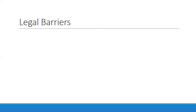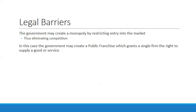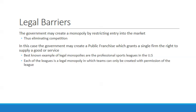In addition to natural and ownership barriers, there are legal barriers. The government may create a monopoly by restricting entry into the market. One example is the government creating a public franchise granting a single firm the right to supply a good or service. Professional sports leagues are a clear example — each league is a legal monopoly where teams can only be created with league permission. The government grants the NFL a monopoly, so you can't just create a team and play against them.